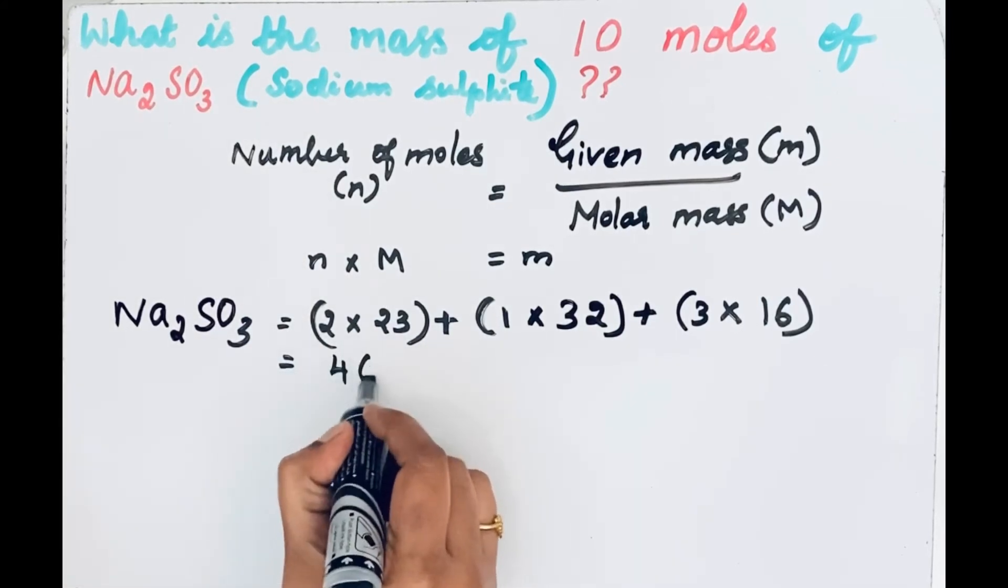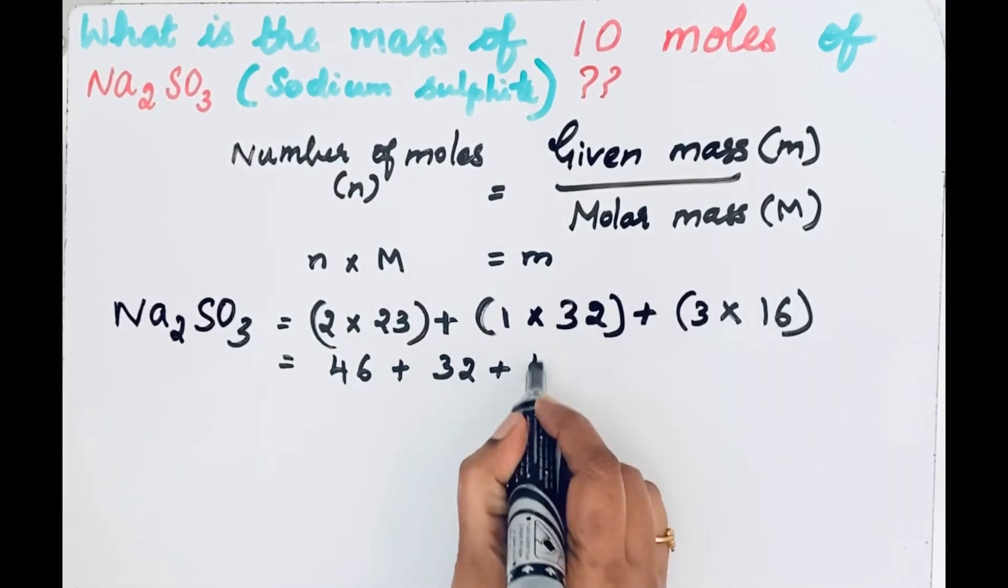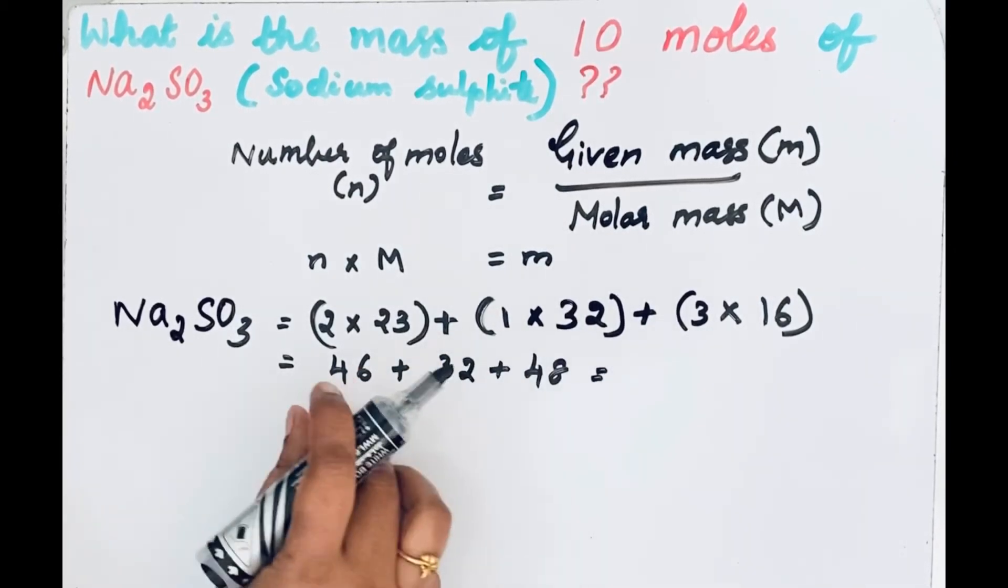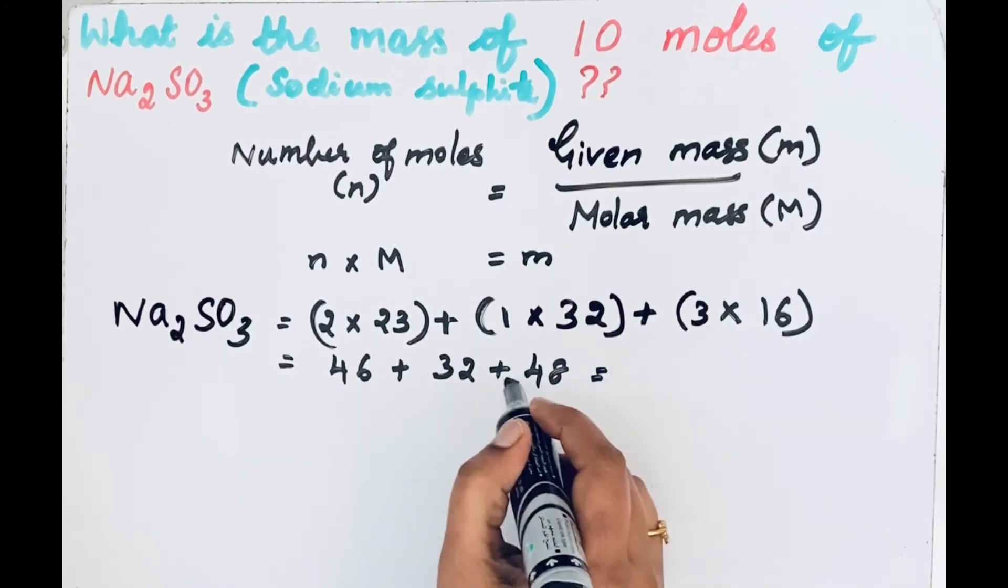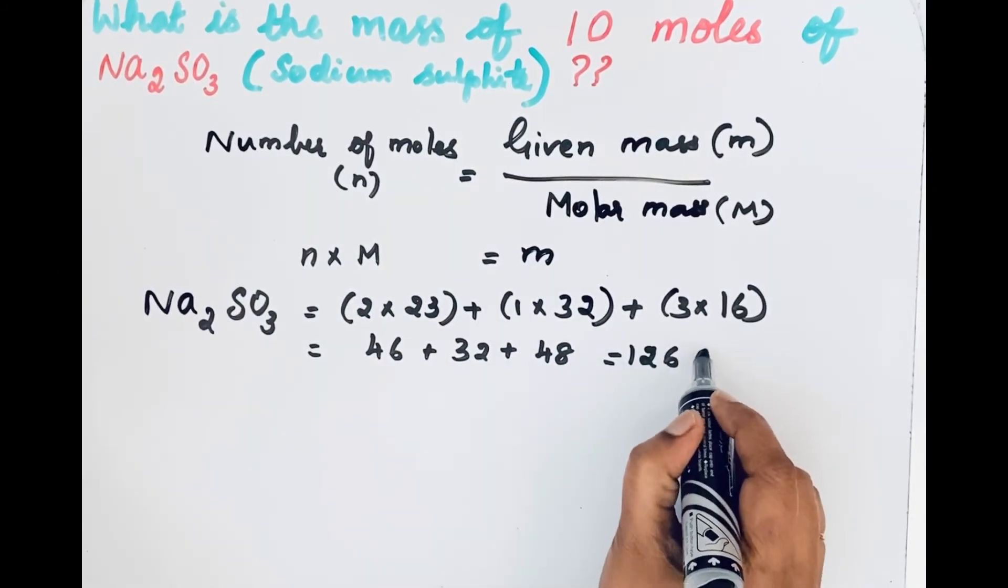So 2 times 23 is 46, plus 32, plus 3 times 16 is 48. So if you add all together, you will get 126 u, unified mass. This is molecular mass.